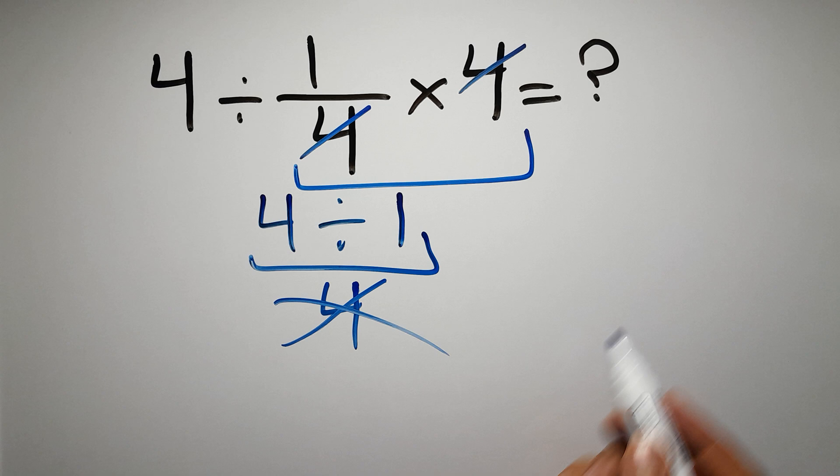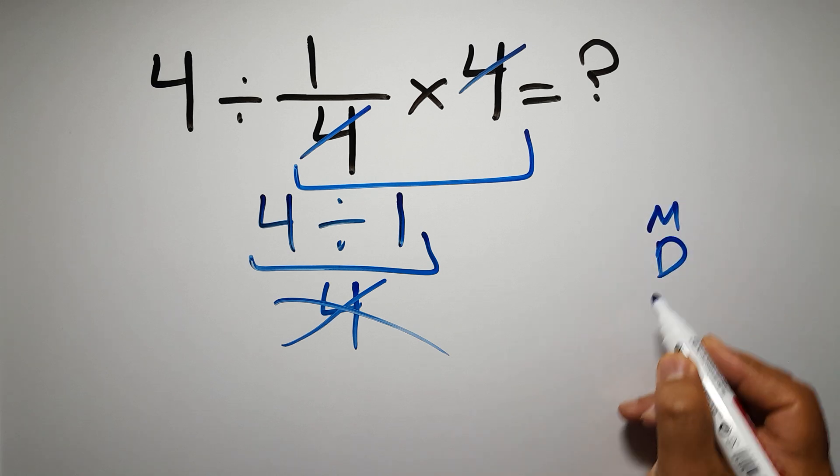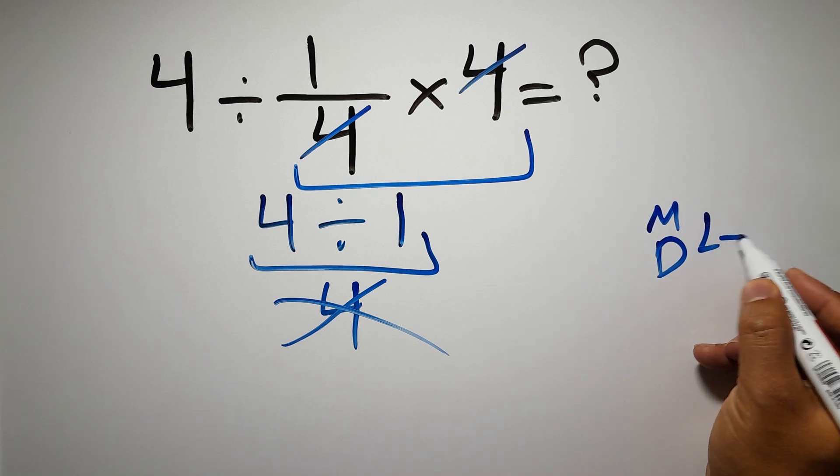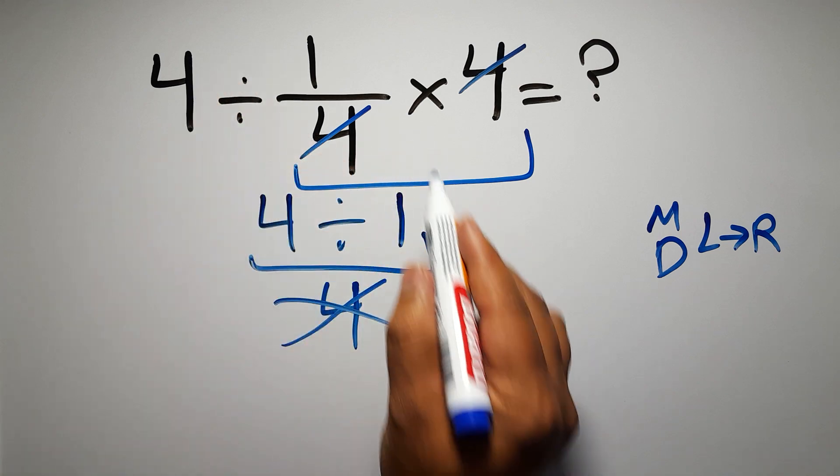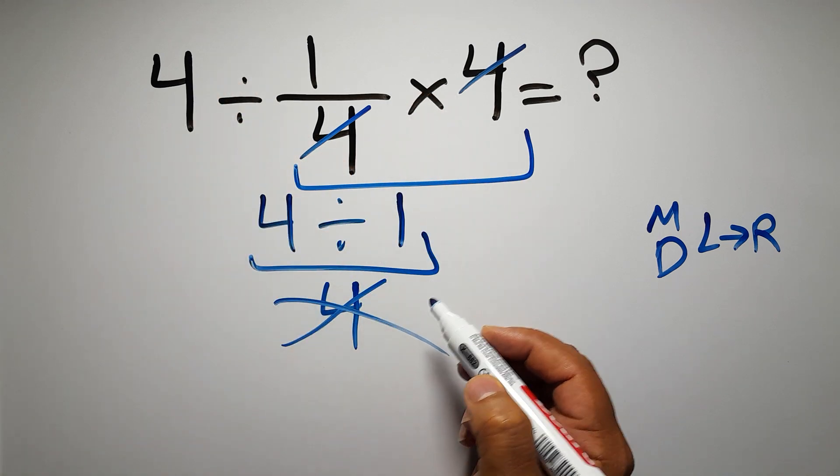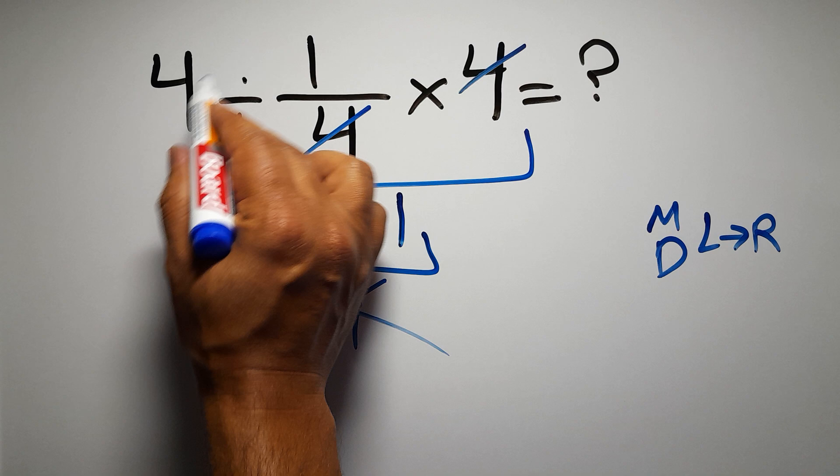According to the order of operations, multiplication and division have equal priority and we have to work from left to right. So here first we have to do this division, then this multiplication. If we do this multiplication before this division, it is wrong.